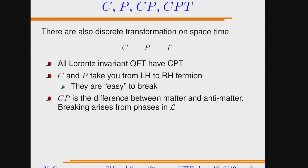For CP, the situation is different — CP takes a left-handed field into a left-handed field, so chiral theories don't have to violate CP. In order to have CP violation in our theory, the Lagrangian must not be real. We'll discuss this in detail tomorrow.